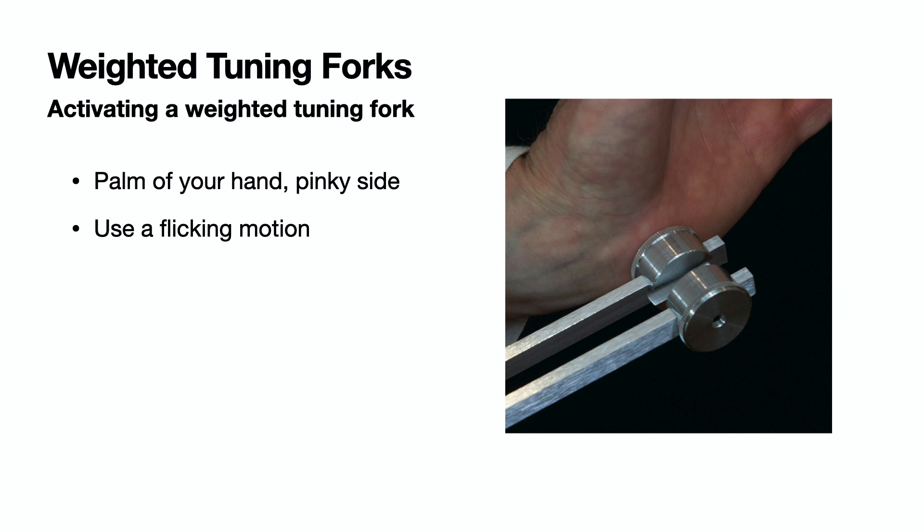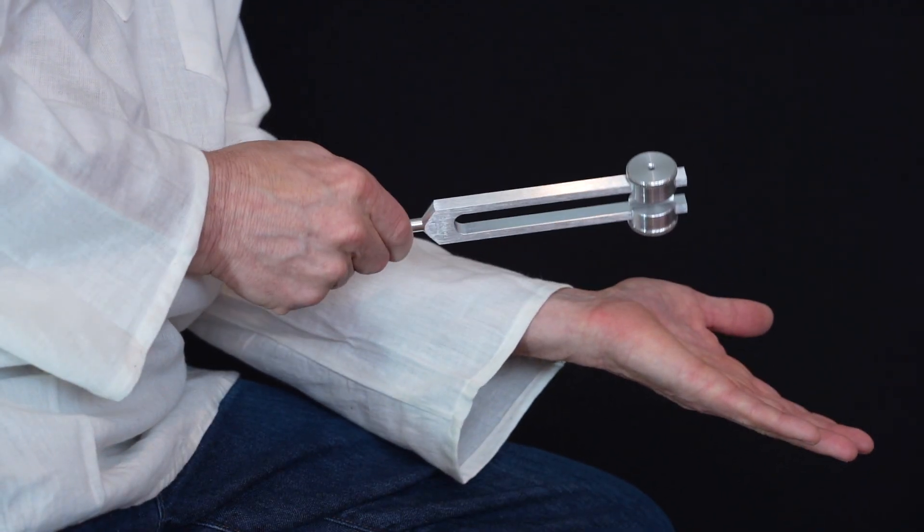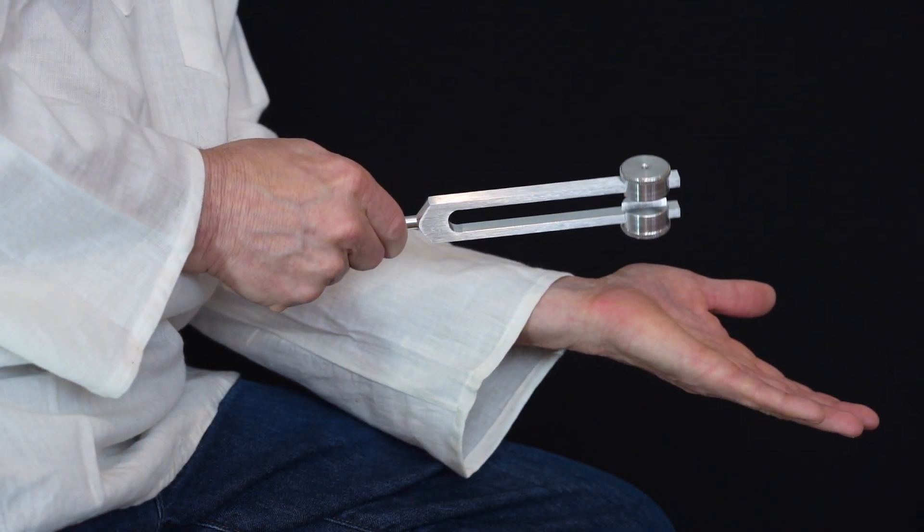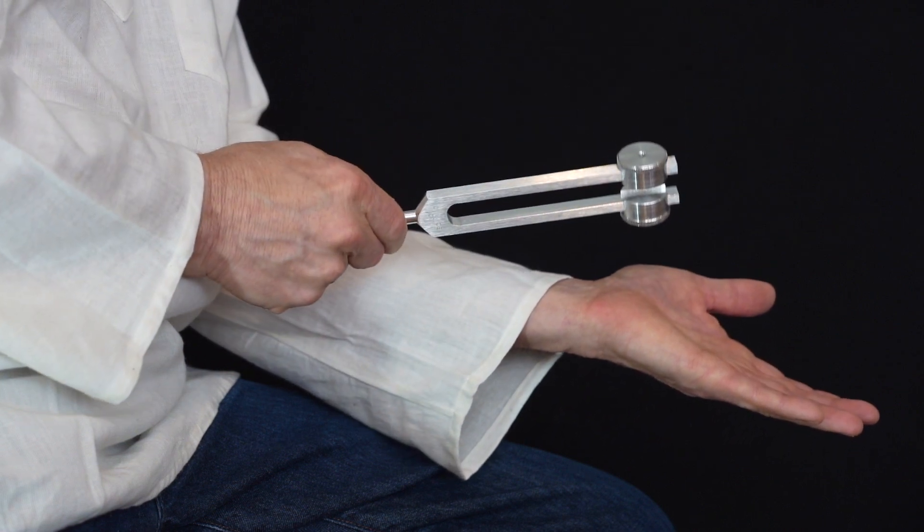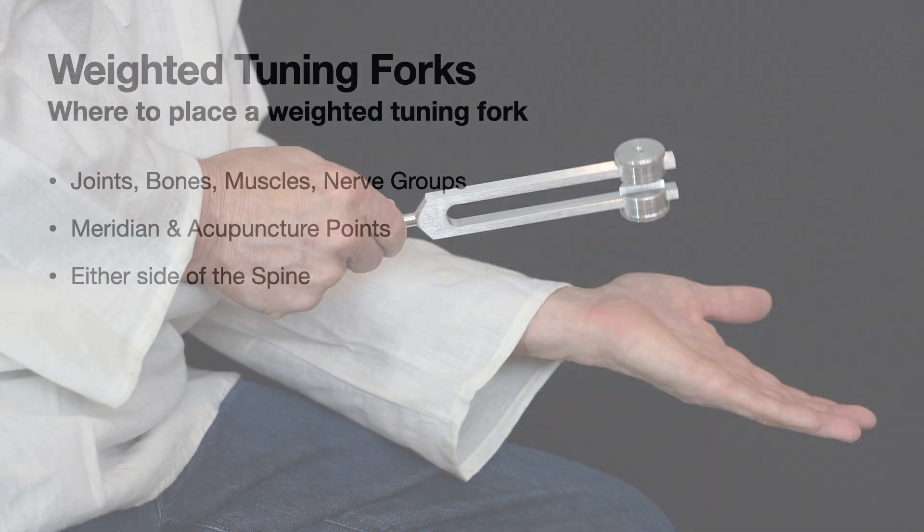If you're not getting a strong vibration, try using a flicking motion as if you're flicking water off your fingers. You will know you get it right when the vibration lasts more than a few seconds. If you are having trouble, tap the fork hard enough so that the weights touch and make a sharp noise. Then just tap slightly less until you've got it.